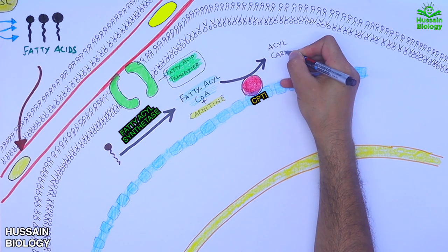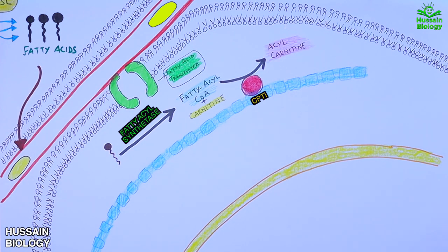From this reaction we get fatty acyl-carnitine, or simply acyl-carnitine, and in this reaction CoA is given off. Then this acyl-carnitine easily diffuses into the intermembrane space of mitochondria as shown in the animation.